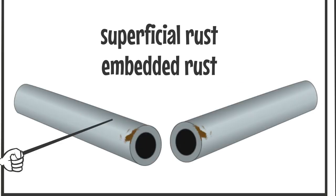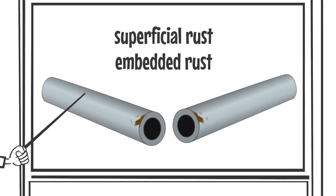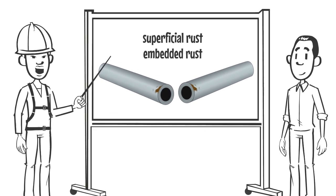Embedded rust, on the other hand, is rust that lies below the original surface of the pipe. The process of embedding it has created a pit or gouge in the pipe. This pit or gouge can act as an initiation site for localized corrosion of the pipe and as a stress riser where stress corrosion might initiate.